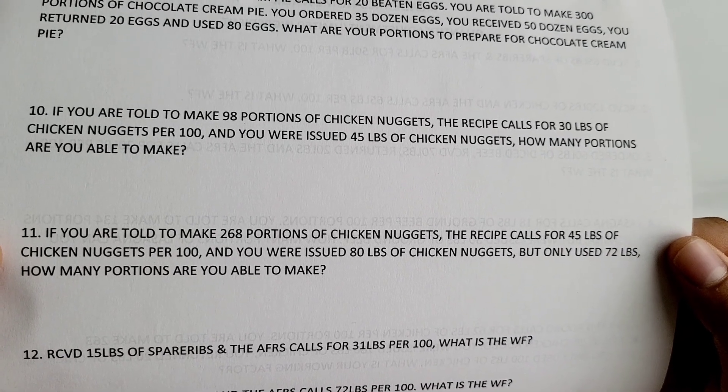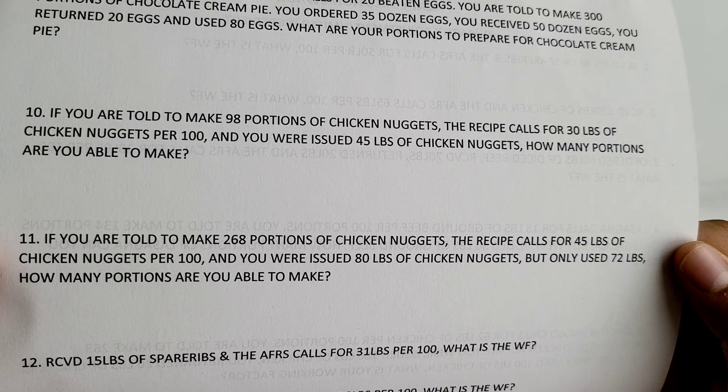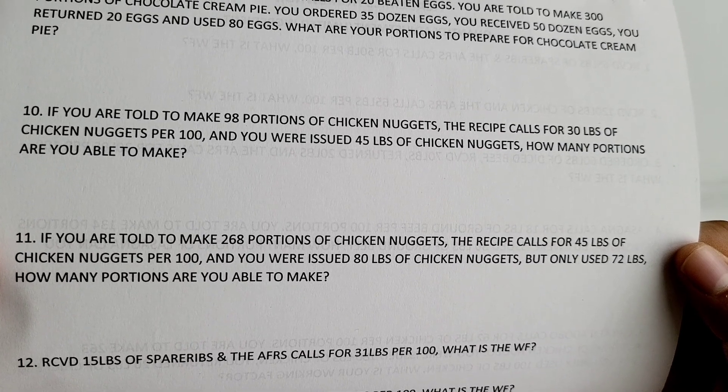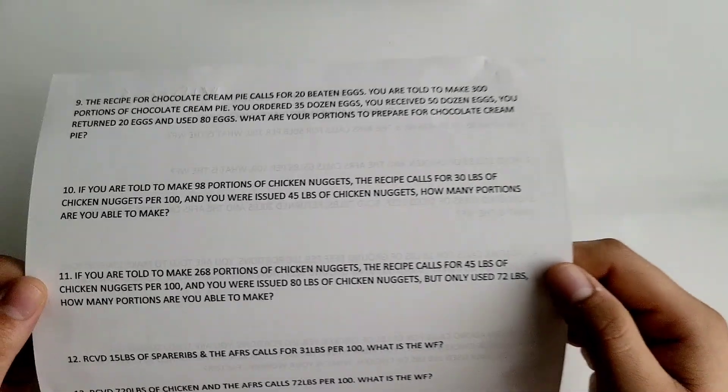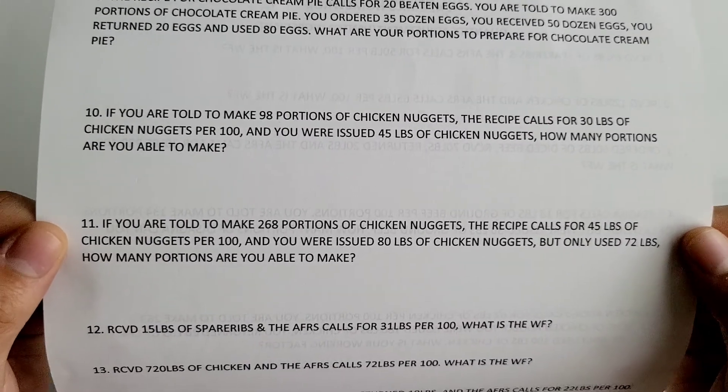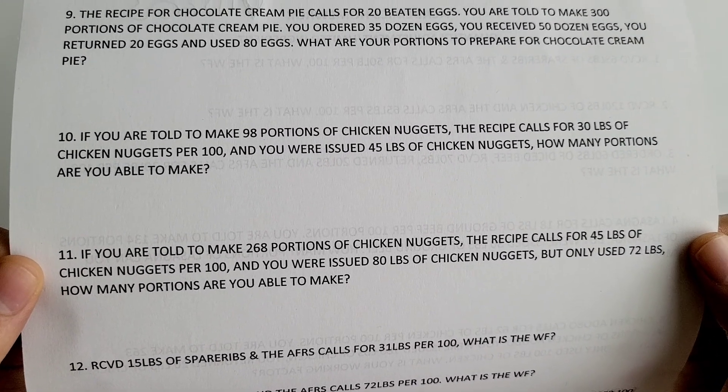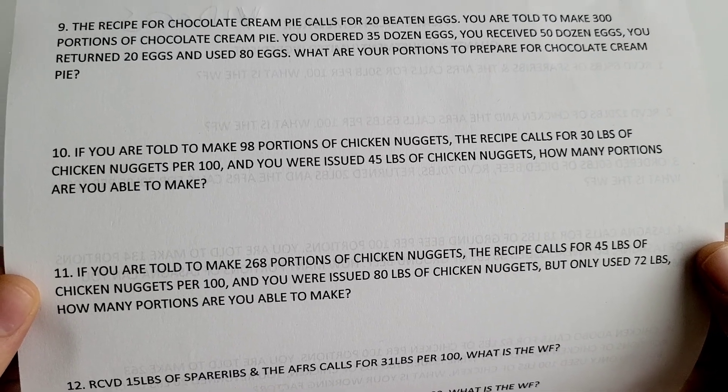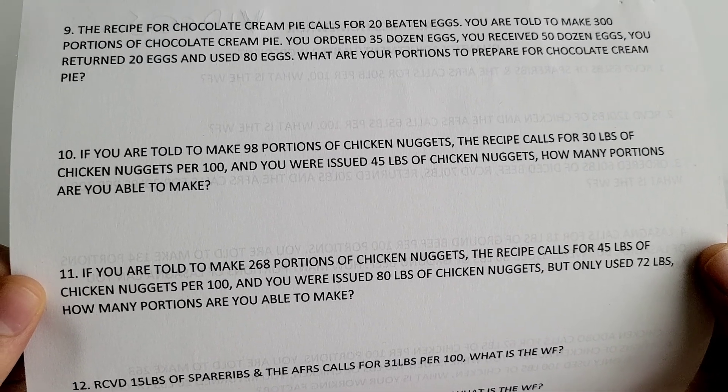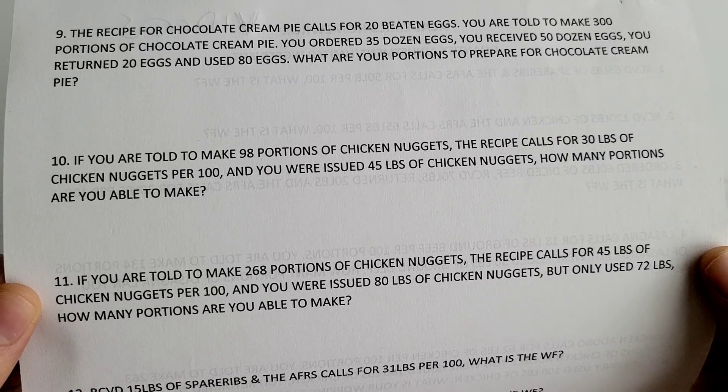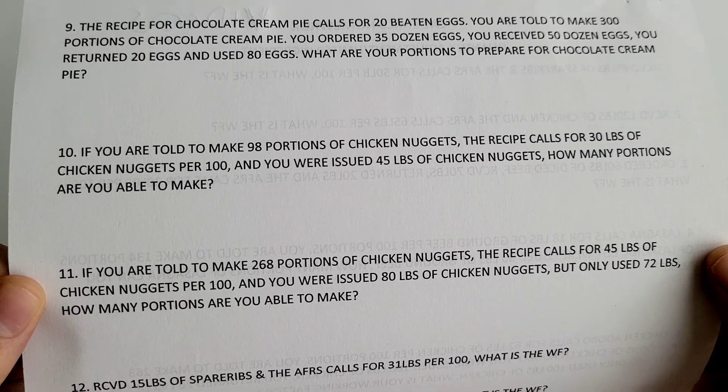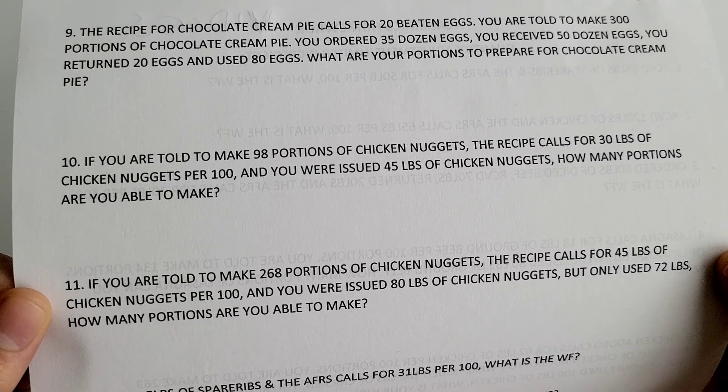Number 11 says: if you are told to make 268 portions of chicken nuggets, the recipe calls for 45 pounds of chicken nuggets per 100, and you were issued 80 pounds of chicken nuggets but only used 72 pounds, how many portions are you able to make?